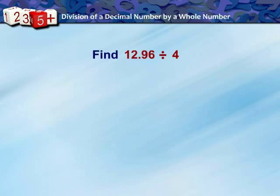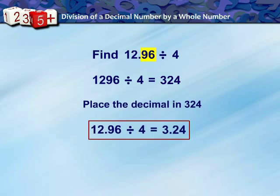Now for 12.96 divided by 4. Divide 1296 by 4. We get 324. As there are two digits to the right of the decimal in 12.96, making similar placement of the decimal in 324, you will get 3.24.